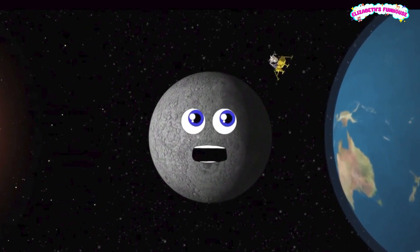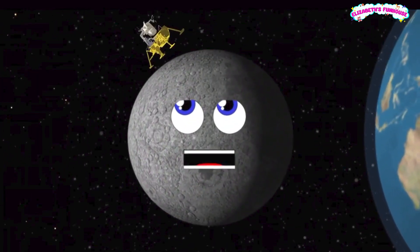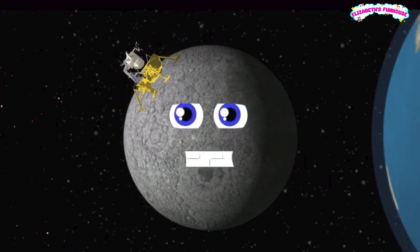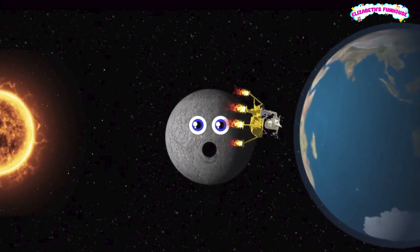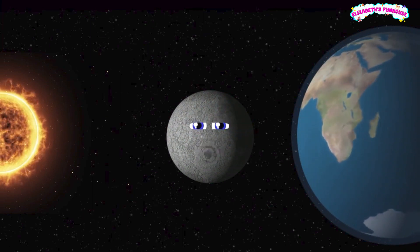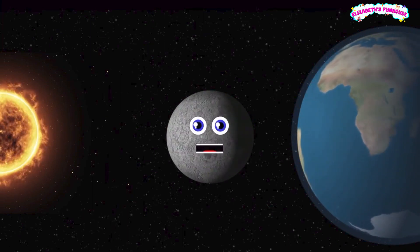238,900 miles from the Earth is the distance measured when the first spaceship landed on my turf. The reason you see one half of my surface all the time is because my rotation's the same speed as the Earth thought in this rhyme.